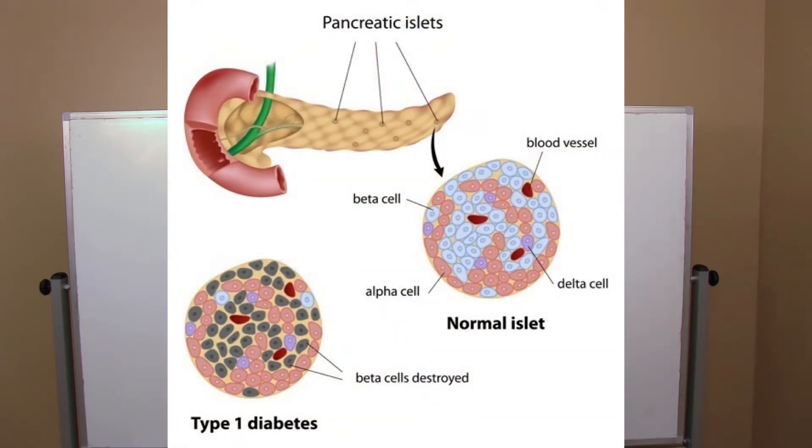All right, so the first form of diabetes we're going to talk about is type 1 diabetes. Type 1 is very different than type 2. It's actually an autoimmune disease. The immune system is attacking what are called the beta cells that are the insulin producing cells in the pancreas, and the immune system destroys those cells pretty significantly, and as a result, the pancreas can no longer make insulin.